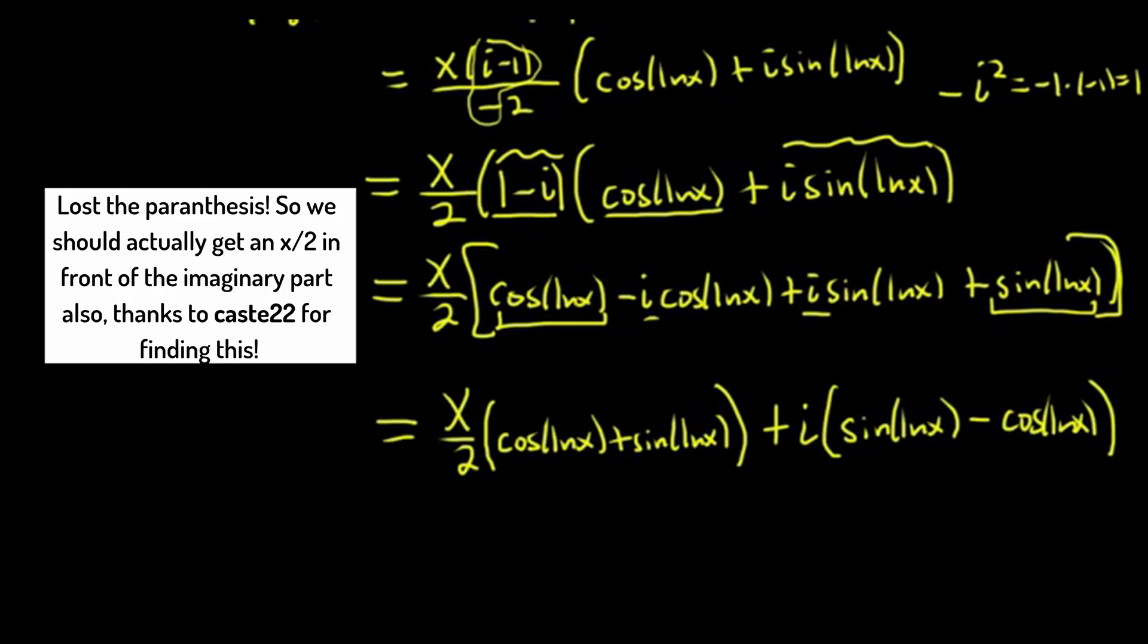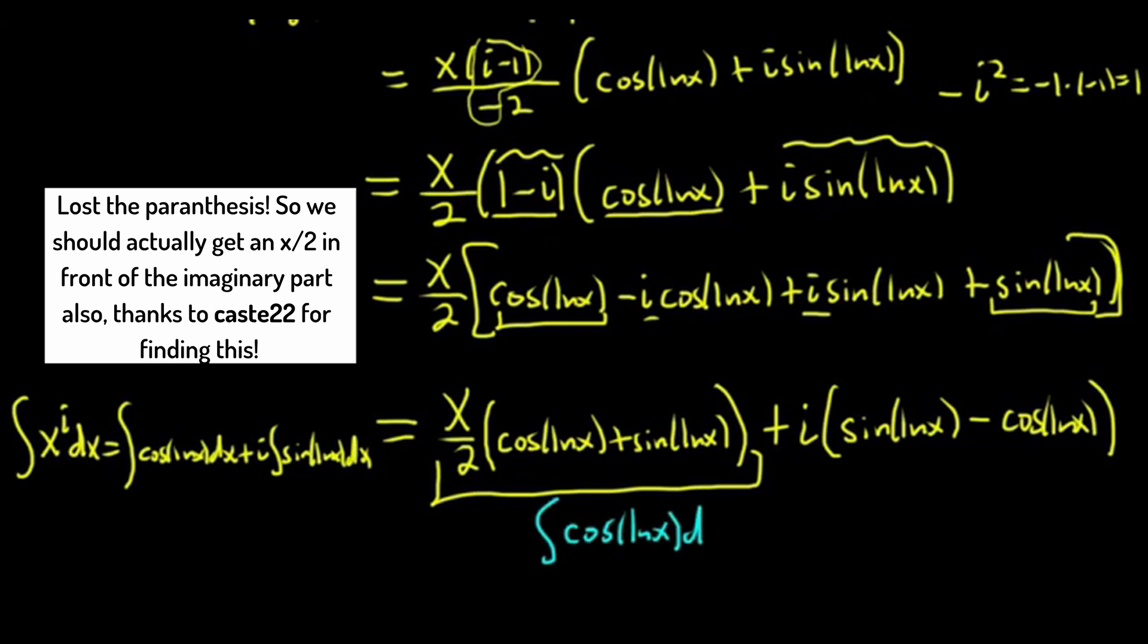And we said that this was equal to x to the i dx. And we also said, if you recall, it was equal to cosine ln x dx plus i integral sine ln x dx. So that means that the integral of cosine ln x is this bad boy here, of course adding a constant. So this would be the integral of cosine ln x. Pretty sure I have a video on this I made a couple years ago of this specific problem. But I didn't do it this way. And then here we have sine ln x dx. So kind of a cool problem.